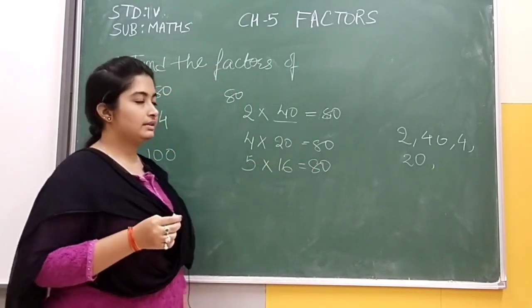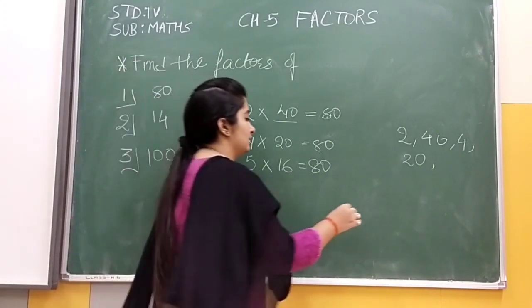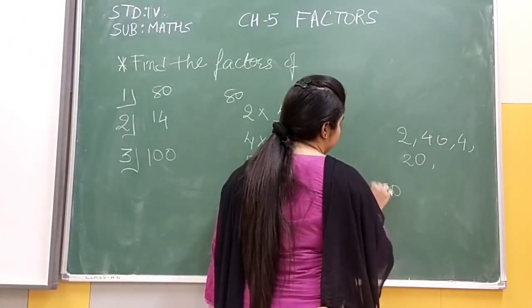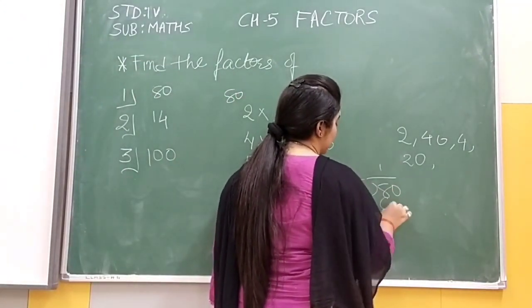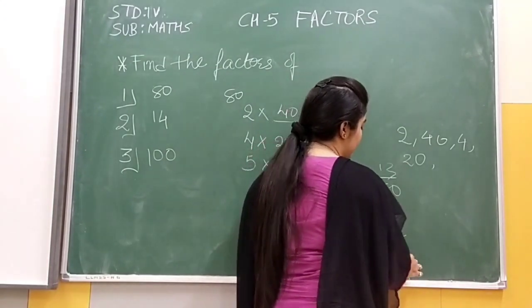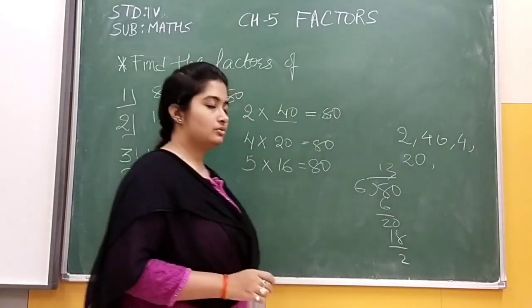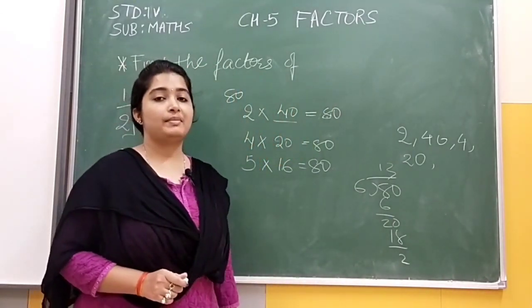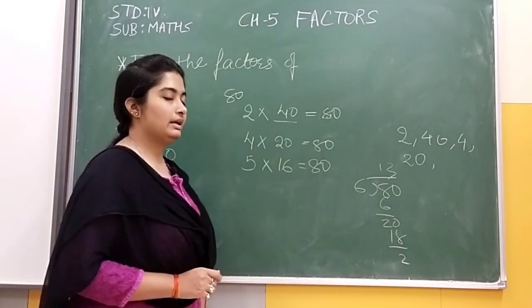Now can we take 6? Let us check. 6 ones are 6, 6 threes are 18. The remainder will be 2. We need remainder 0, so we can't take 6.